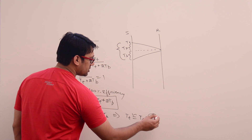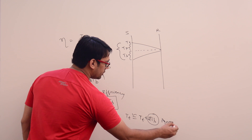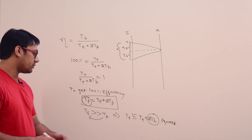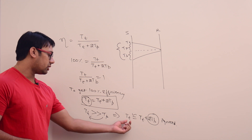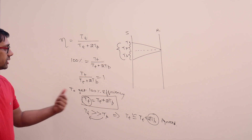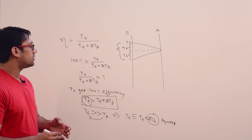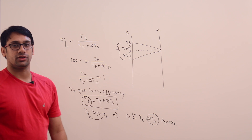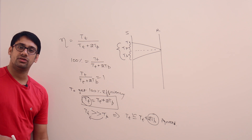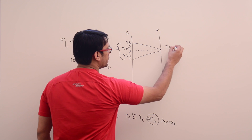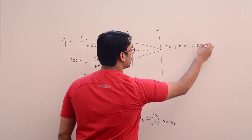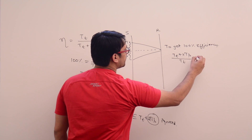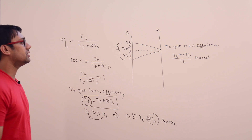If TT is very large compared to TP, the 2·TP term can be ignored and efficiency approaches 100%. But we need to find a concrete limit. The other way to look at it: to get 100% efficiency, if we transmit TT plus 2 into TP upon TT packets continuously, we get 100% efficiency.